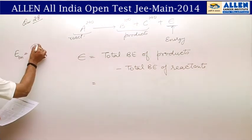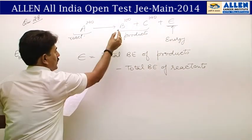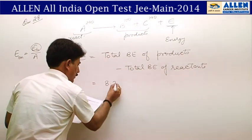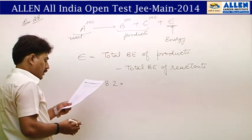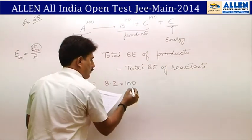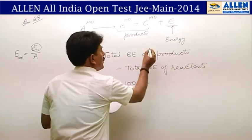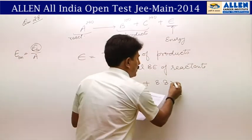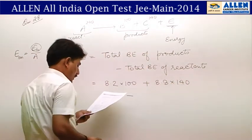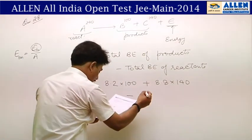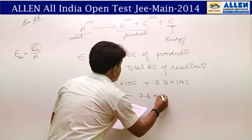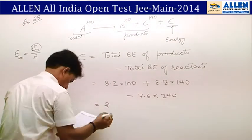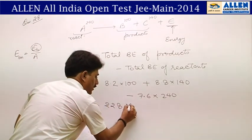Binding energy = (binding energy per nucleon) × (mass number). So: ε = (8.2 × 100) + (8.8 × 140) − (7.6 × 240). Solving this gives ε = 228 MeV, which is the correct answer for this question.